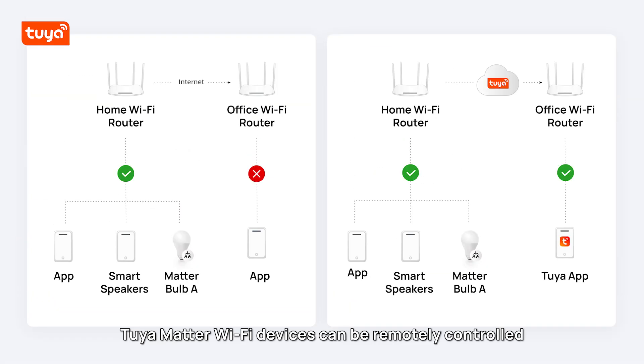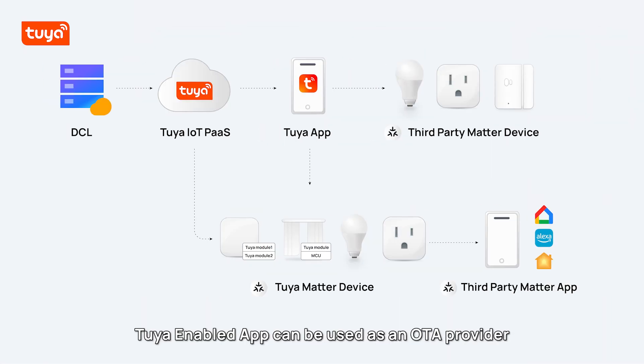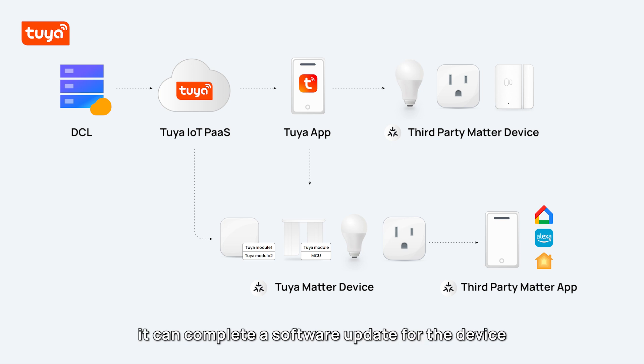Tuya Matter Wi-Fi devices can be remotely controlled through Tuya Cloud without any hub. The Tuya-enabled app can be used as an ODA provider — when a Matter device requests an update, it can complete a software update for the device.